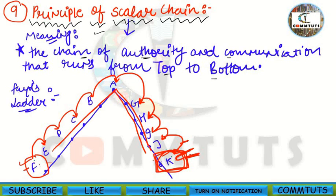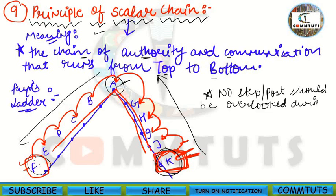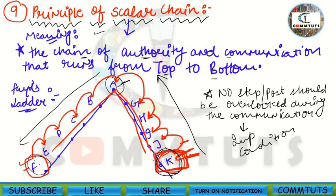The Principle of Scalar Chain states that the chain of authority and communication runs from top to bottom or from bottom to top — from highest rank to lowest rank or vice versa. An important condition of this principle is that no step or no post should be overlooked during the communication process. F must pass through all nine posts to get his message to K.